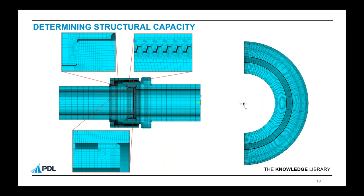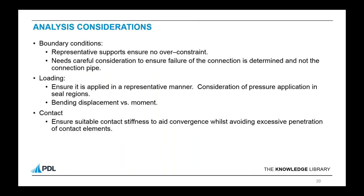The last considerations are fairly standard analysis considerations. Boundary conditions must be representative and must not over-constrain the model. Typically what we're trying to do is find the capacity of the actual connection and prove it's stronger than the pipe it's connected to. If you're not careful and just model the connection with the associated pipe, you'll pick up the failure of the pipe before the connection — so you need to think about what you can do to stop that. This may be applying elastic material properties to certain parts of the pipe, or actually thickening the pipe — it's not uncommon when connections are tested to have thicker pipes welded to them to make sure the connection fails rather than the pipe.